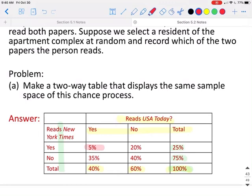So if 40% read USA Today, and 5% of them do also read New York Times, that leaves us 35% that do not read the New York Times. And we can do subtraction to fill in the other pieces as well.